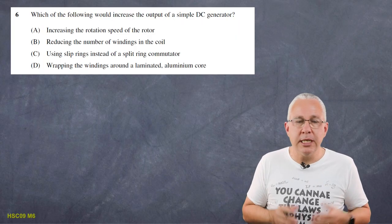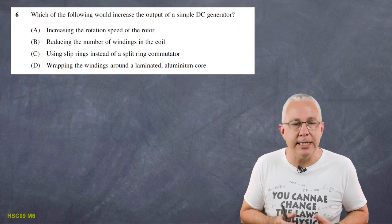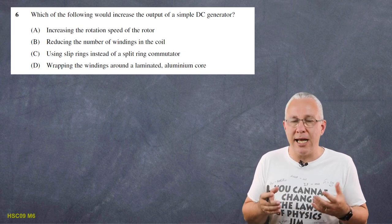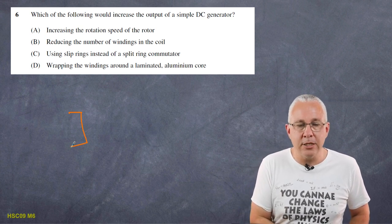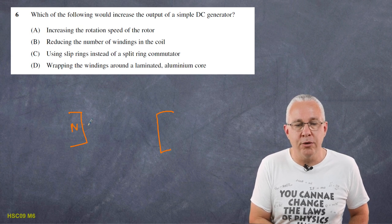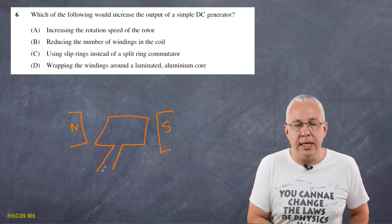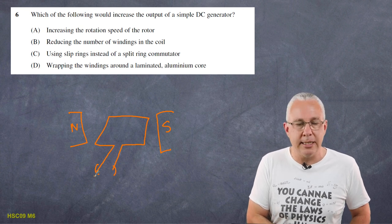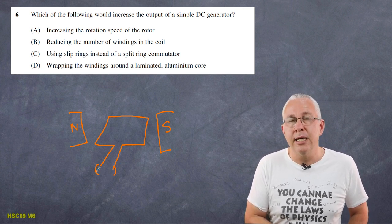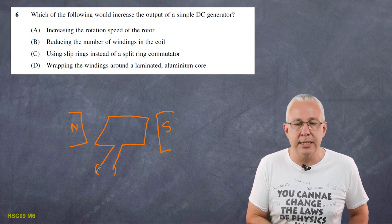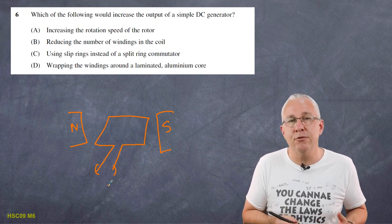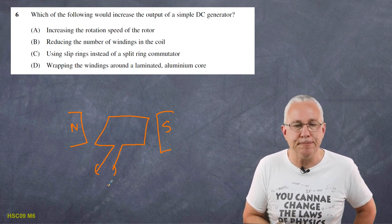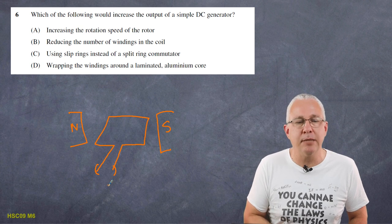Let's get started. Our first question is about a DC generator: which of the following would increase the output of a simple DC generator? The structure of a DC generator has a magnet on one side (north) and a magnet on the other side (south), with a loop of wire within the magnetic field and a split ring commutator, which allows the EMF generated to remain in the same direction. As it turns it produces an EMF and, if the circuit is closed, a current as well.